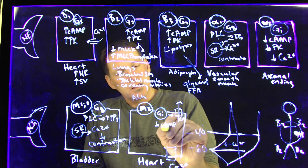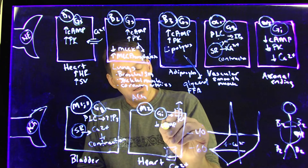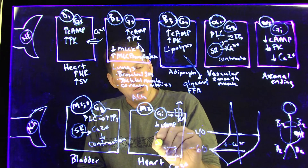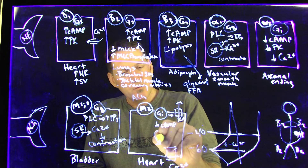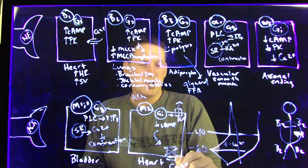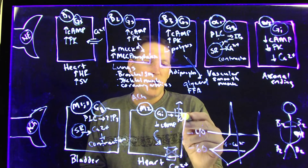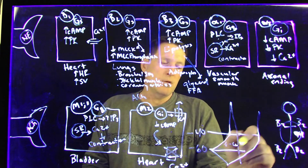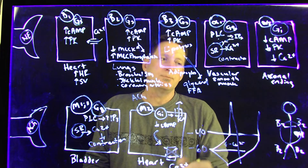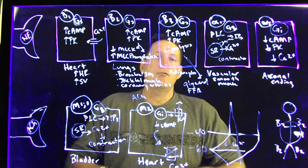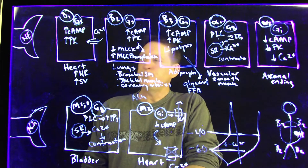So the decrease in cyclic AMP closes down the calcium channel; the cell is hyperpolarized and the rate is slowed. That's it for receptor physiology.